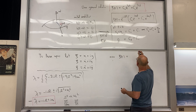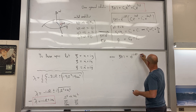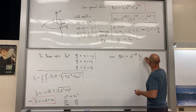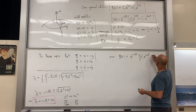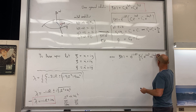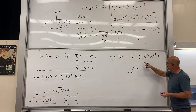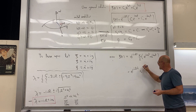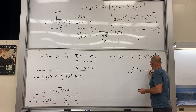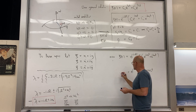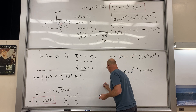Substituting back: c(t) equals e^(-i·Omega·t) times (x-zero over 2) times [e^(i·omega-naught·t) plus e^(-i·omega-naught·t)], which equals e^(-i·Omega·t) times x-zero times cos(omega-naught·t). And since c equals x plus i·y, we have a very nice result.